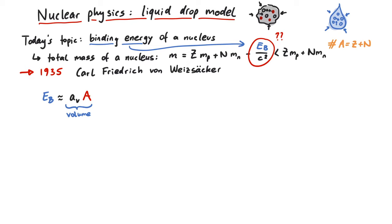But this is not the end of the story. There are several small effects we have to include here in order to provide a proper description of the nucleus. For instance, we have to consider that protons and neutrons at the surface of the nucleus don't really have a lot of interaction partners,